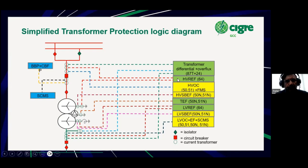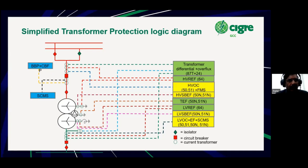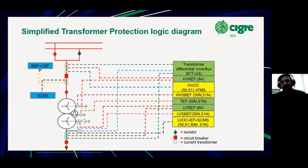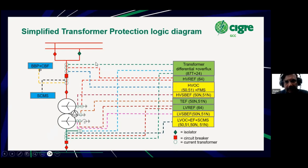The restricted earth fault protection is normally used only when there is a star winding which is earthed. It doesn't cover phase-to-phase faults — it's only for earth faults. But the reason we use it is that, as far as earth faults are concerned, it is more sensitive than the differential protection. The differential protection will cover both phase-to-phase faults and phase-to-earth faults, while the REF protection will only cover earth faults, but they can be said to be more sensitive than the differential protection.